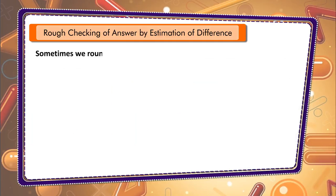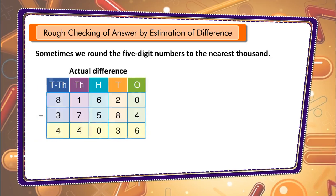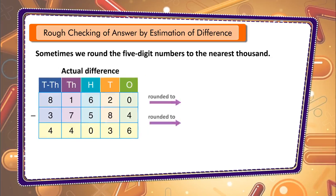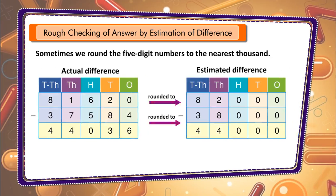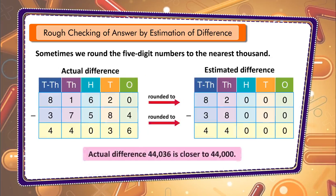Sometimes we round five-digit numbers to the nearest thousand. In that case, the actual difference 44,036 is closer to 44,000.